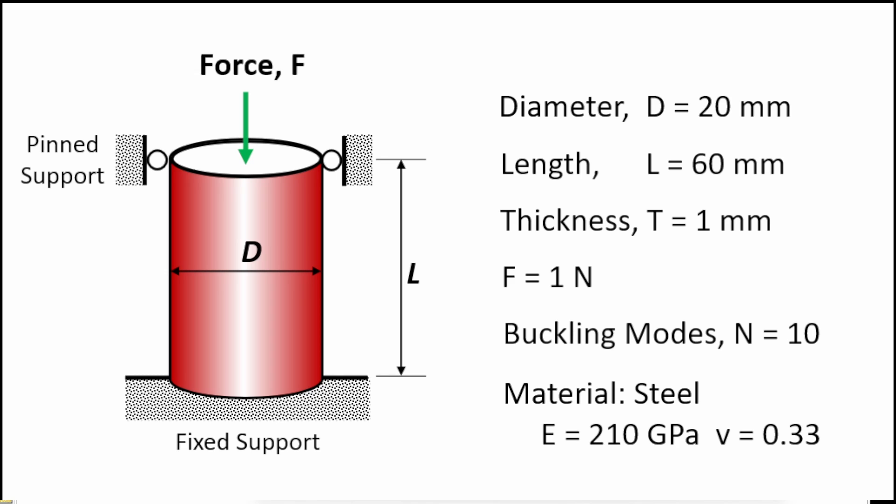We're going to run the simulation to see what buckling response the structure undergoes, looking at 10 possible buckling modes. The material will be steel with a Young's modulus of 210 GPa and a Poisson's ratio of 0.33.